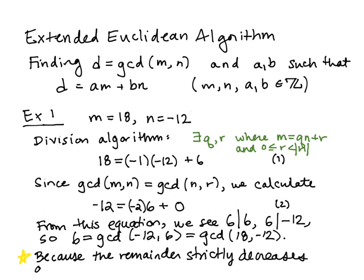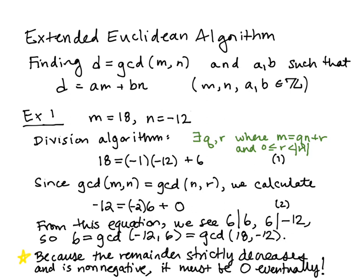I'm going to tell you first why this algorithm terminates. The remainder strictly decreases in each iterated step of this algorithm and it has to be non-zero. So if it's going to decrease and decrease, it has no option but to eventually be zero, and at that point we stop.